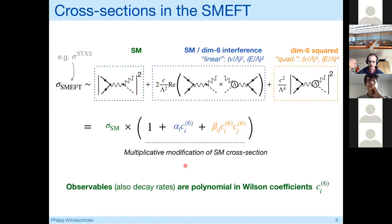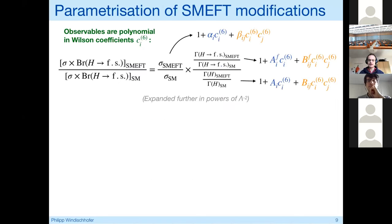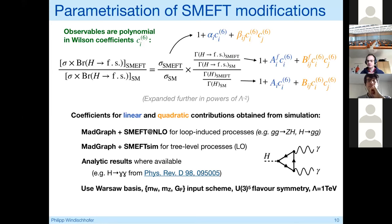If you take this SMEFT Lagrangian and use it to compute cross sections, any cross section will receive three different kinds of contributions: the standard model part, some interference between the standard model and matrix elements that have a single dimension six insertion which scales linearly with the Wilson coefficients, and some term that scales like the square of the Wilson coefficients. Overall, that means any cross section in the SMEFT will be a polynomial in the Wilson coefficients and that polynomial will simply act as a multiplicative modification of the original standard model cross section.